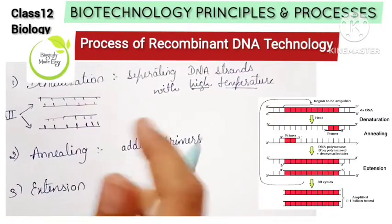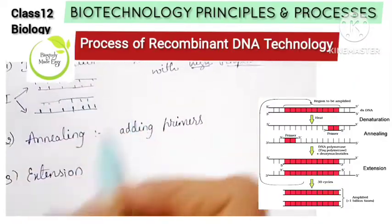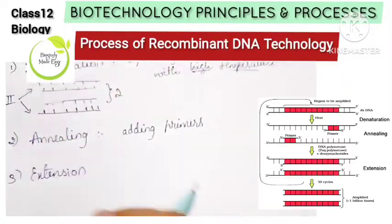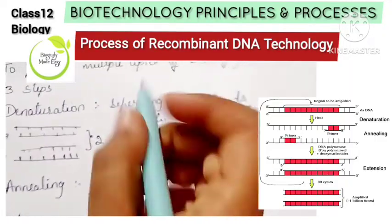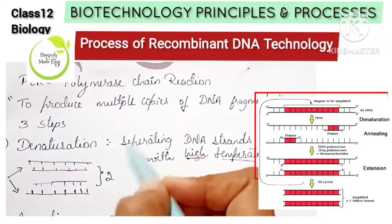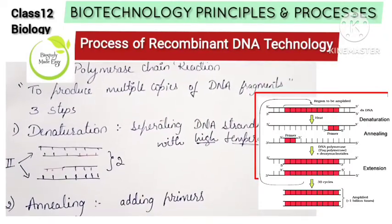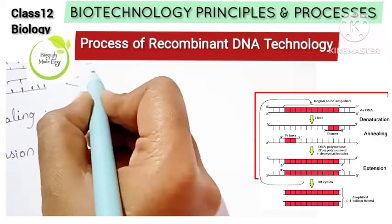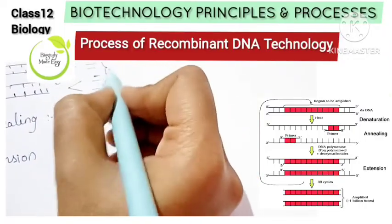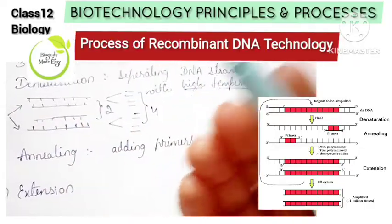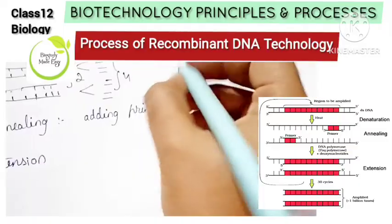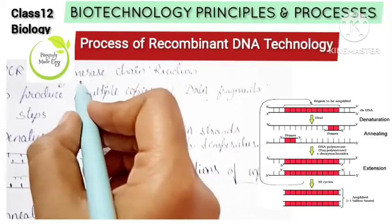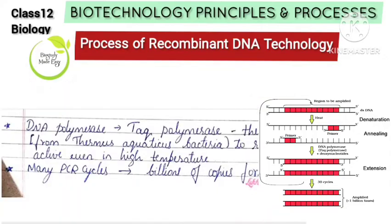The third step is extension: the DNA strand is extended to form new copies. After one cycle, we have two copies. This process is repeated — denaturation, annealing, extension — and in each cycle, copies double: 1, 2, 4, and so on, forming millions of copies of the DNA fragment using polymerase chain reaction.